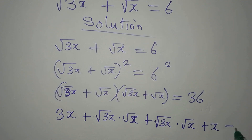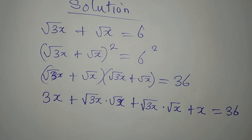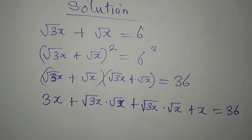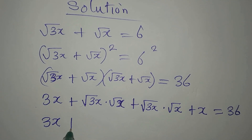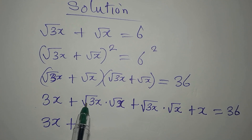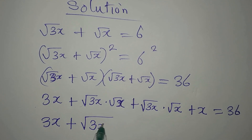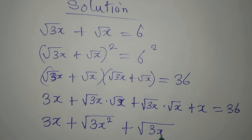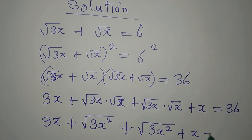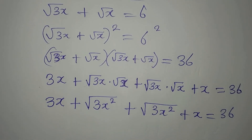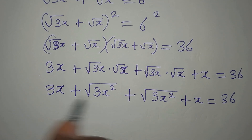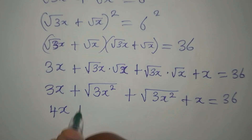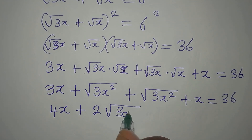Continuing from here: we have 3x, and we can combine the two middle terms since both are roots — that gives us 2 times square root of 3x squared, then plus x, and everything equals 36. So 3x plus x gives us 4x, plus 2 square root of 3x squared equals 36.